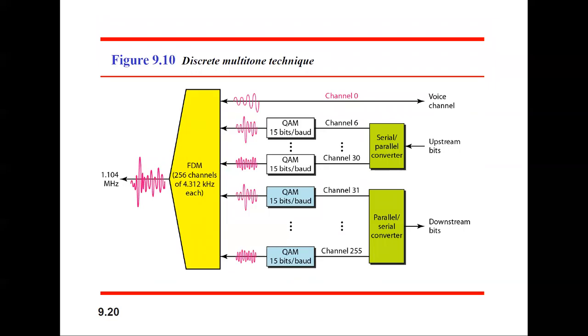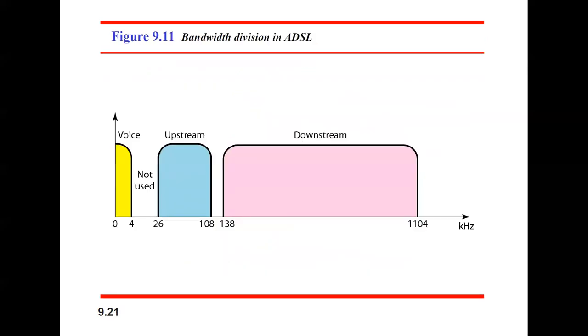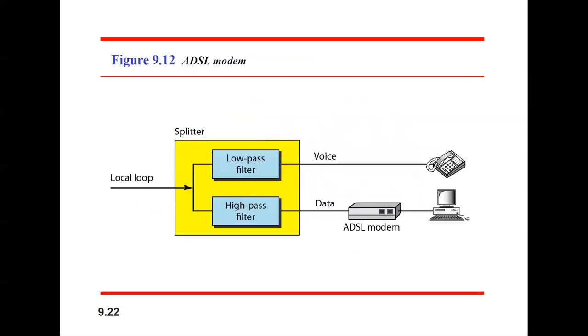This picture explains the discrete multi-tone technique. Here is also given information about voice upstream and downstream. The ADSL modem starts from the local loop and splits to low-pass and high-pass filters. For low-pass, we use voice, while for high-pass, we use data with the ADSL modem.